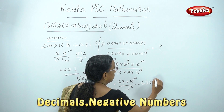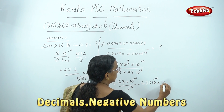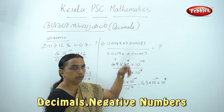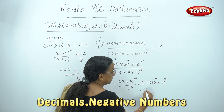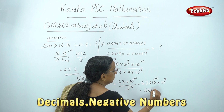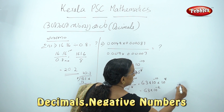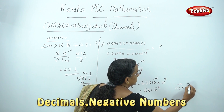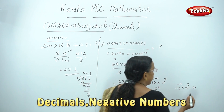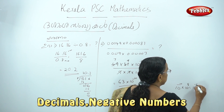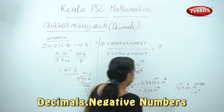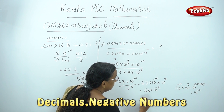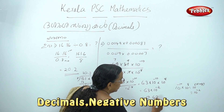63 into 10 minus 10 into 18. 8 minus 8. That is 10 plus 8. This is 63 into 18 minus 2. That is 10 plus 8 plus 10 plus 8. This is 0.63.